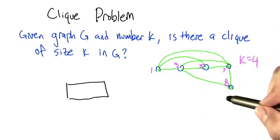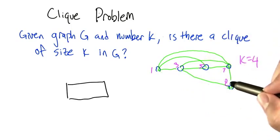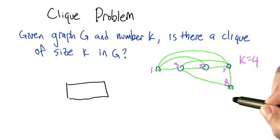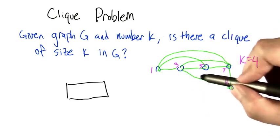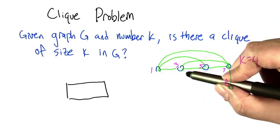Now that we've taken those edges away, we can see node 8 now has a degree of 2, so 8 can't be part of the 4-clique either.